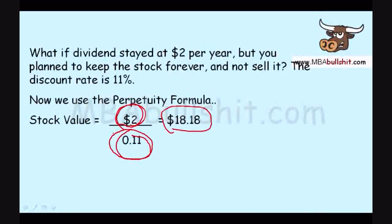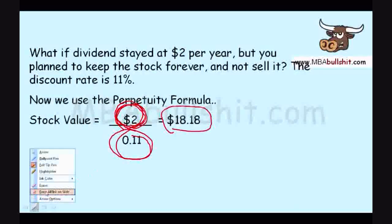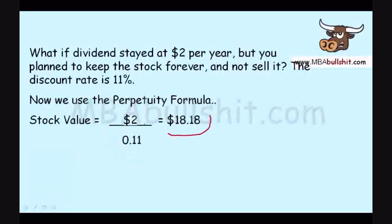If this stock is earning $2 per year in dividends for you and you will not sell the stock after 3 years like in the first example, and you plan to keep the stock forever, you will not benefit from the $25 that you would get if you sell the stock after 3 years. So if you will not benefit from that $25 at the end of 3 years, then the only benefit for you is the $2 per year dividend. We compute the value of this stock as $2 dividend divided by the discount rate, and you get $18.18.